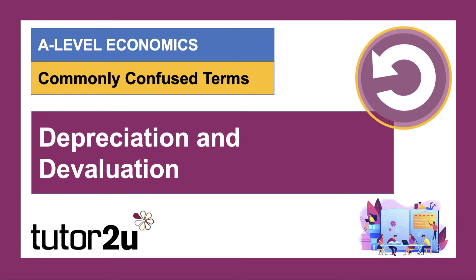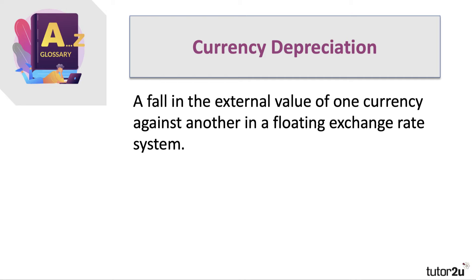Another commonly confused pair: depreciation and devaluation. A currency depreciation is a fall in the external value of one currency against another — for example, a fall in the value of the pound against the euro or the US dollar — but it must happen inside a floating exchange rate system, whether free floating or managed floating.